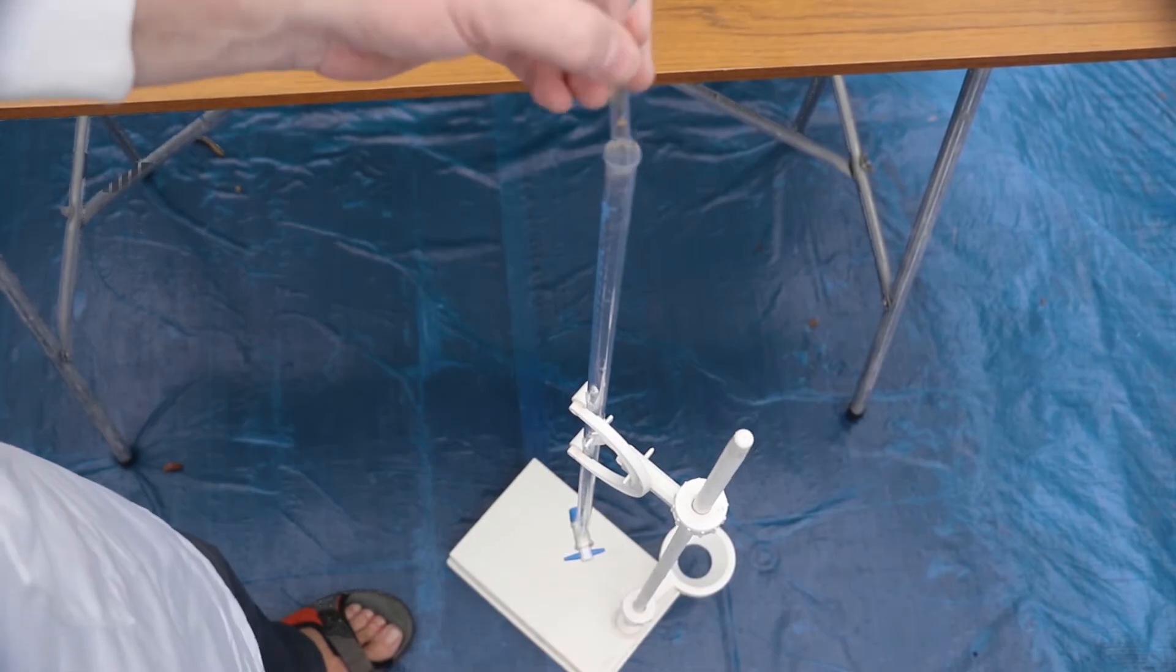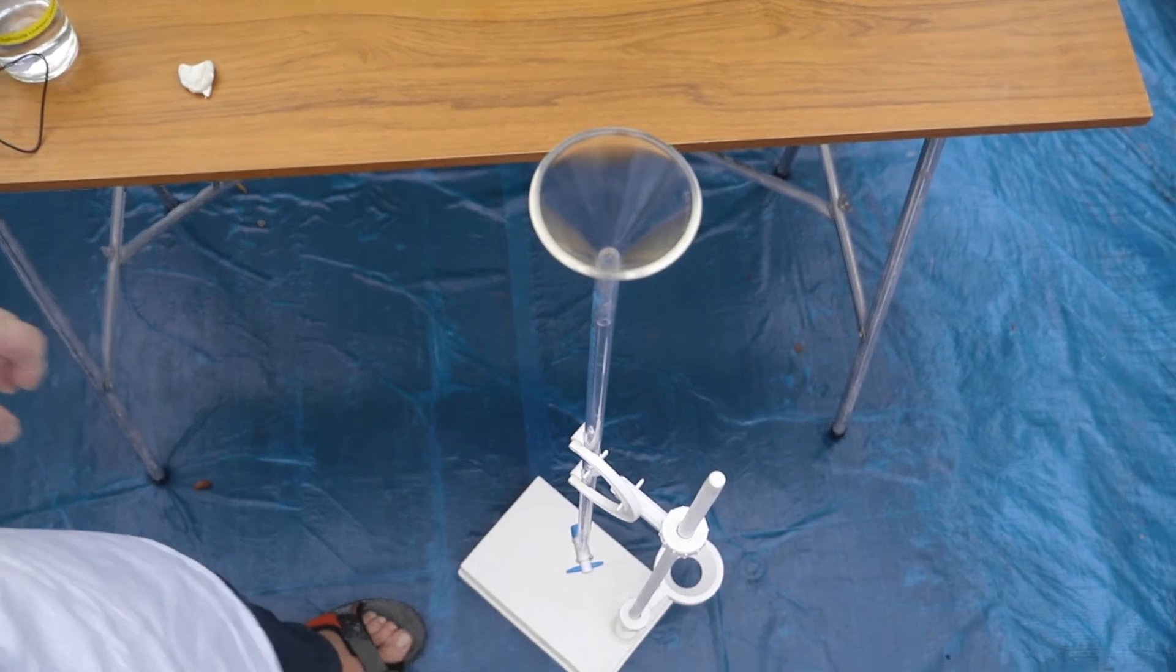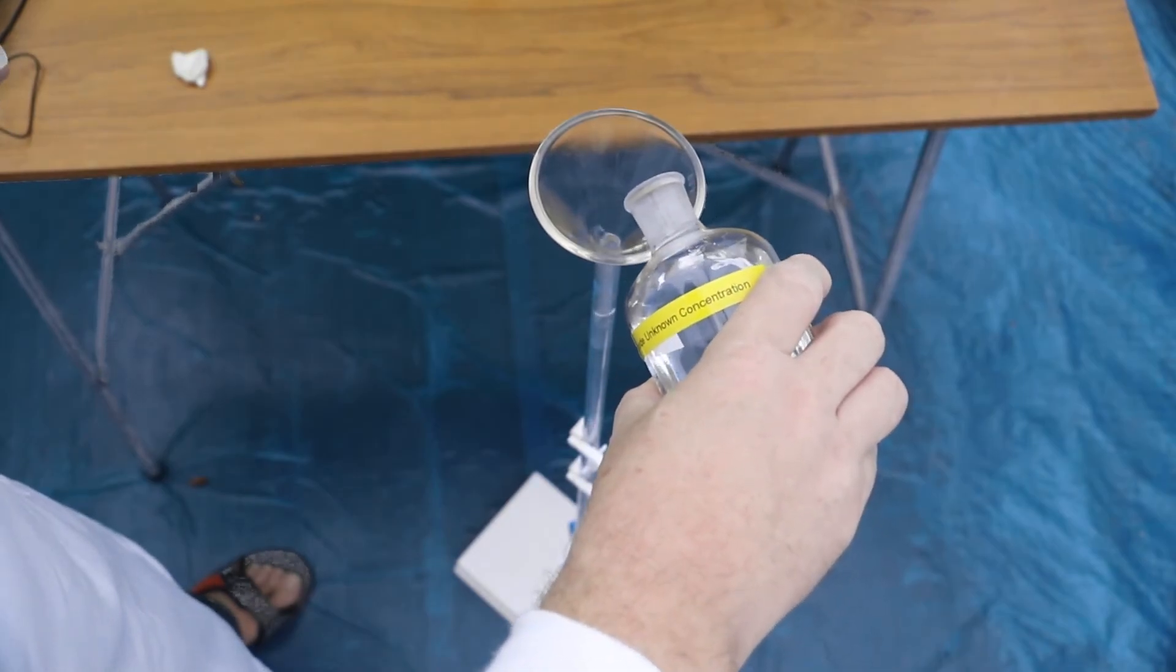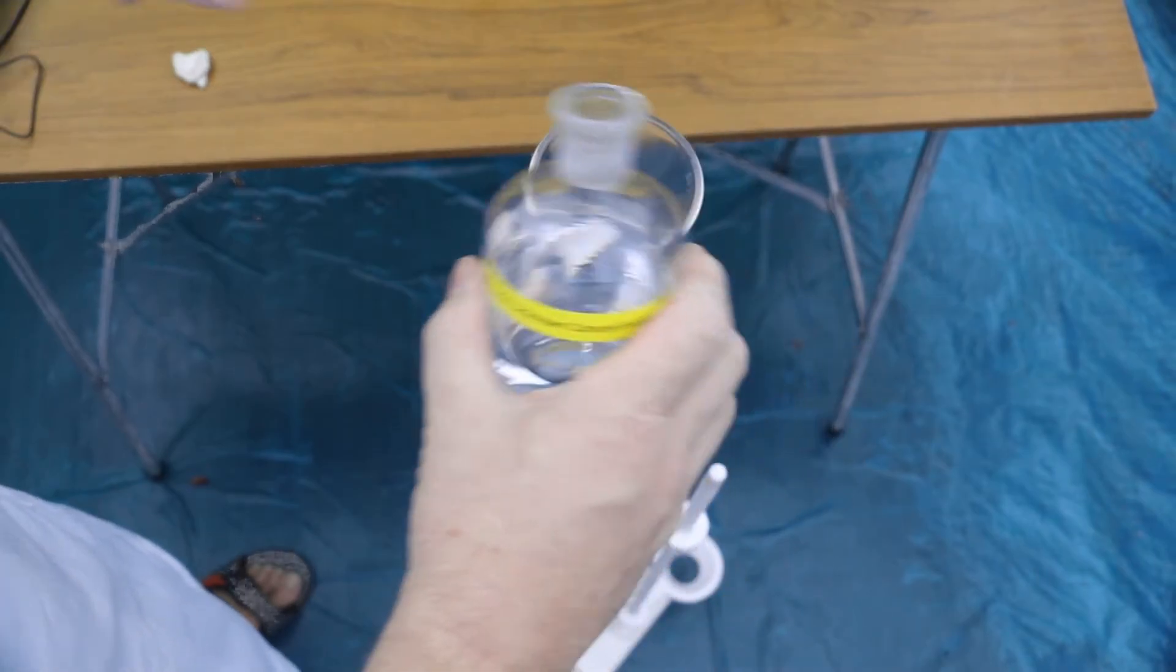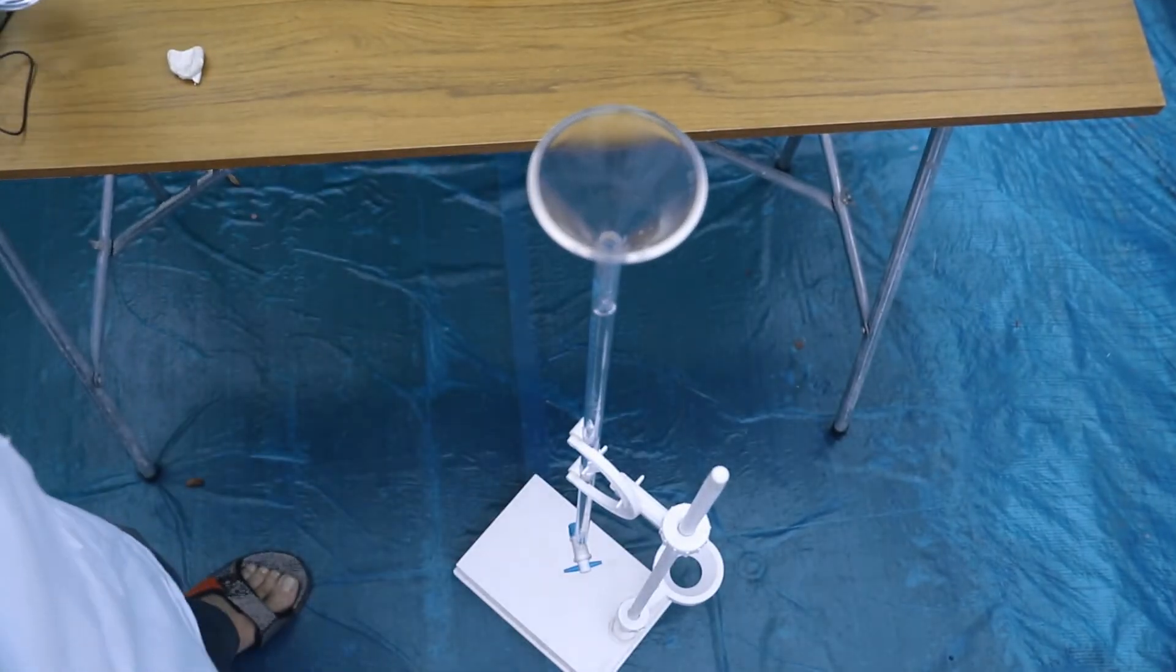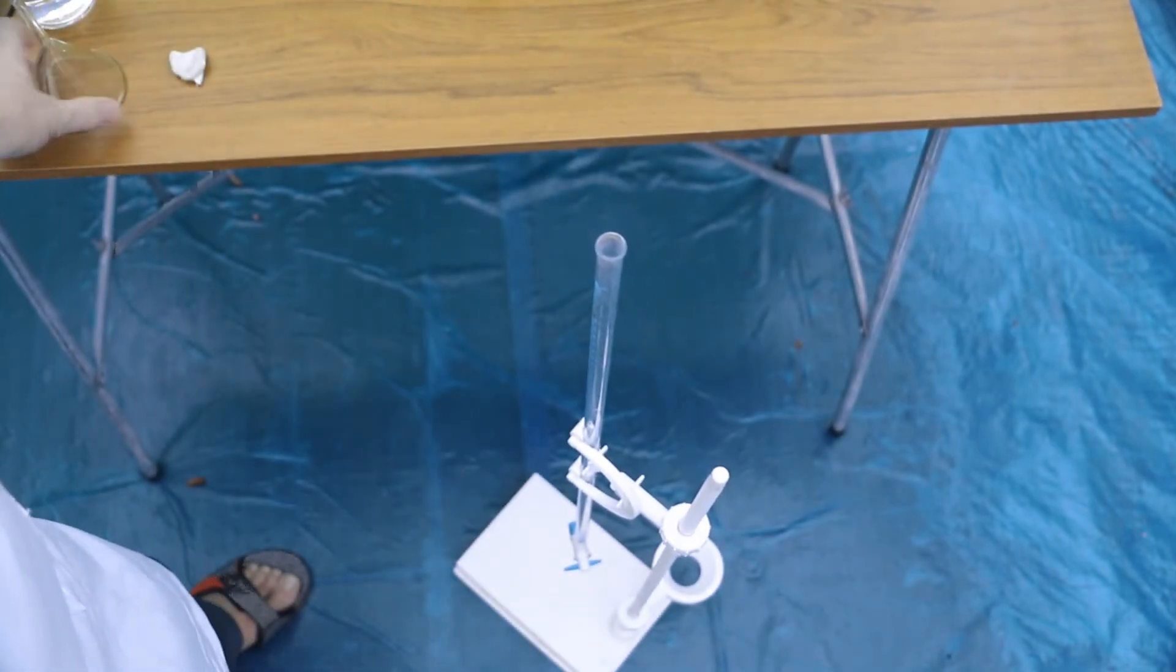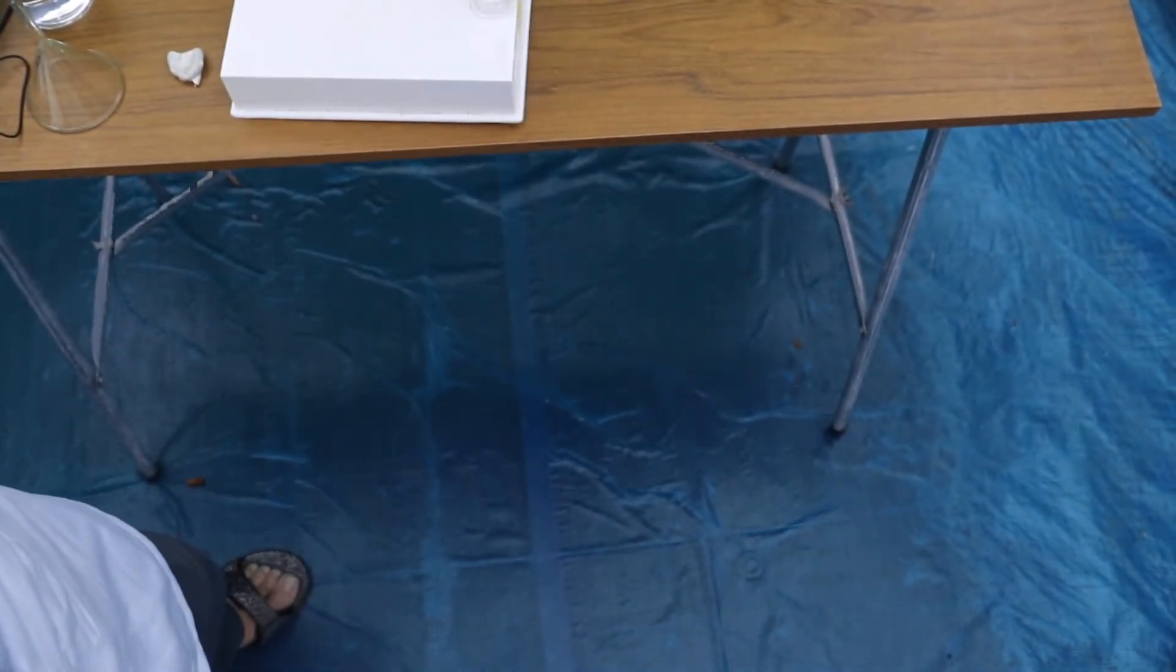Because I can't reach, I'm going to put a funnel in here. Then we can fill up the sodium hydroxide on the ground, making sure that the tap is shut first. Having put in the unknown concentration of sodium hydroxide in here, then we can put this back up on the bench so we can do the titration.